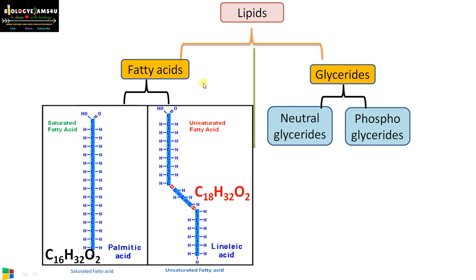In the case of unsaturated fatty acid, as in linoleic acid, it has double bonds. It has a low melting point and is liquid at room temperature. In short, fatty acids are long chain hydrocarbons with a carboxyl group (COOH group) at one end.